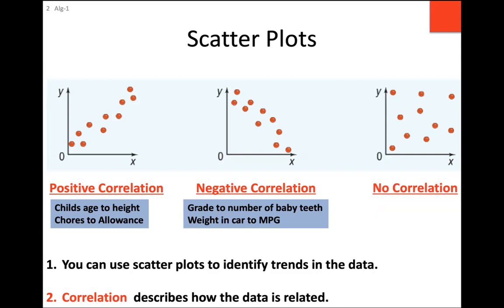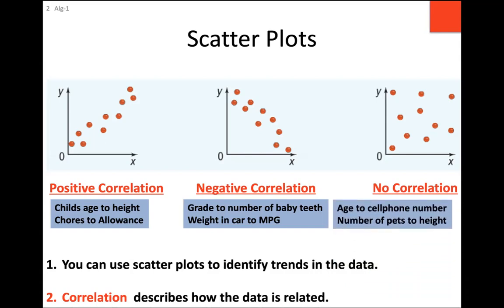Even though the third pattern doesn't look like one, we call no pattern a pattern — when there is no pattern, we say there is no correlation. The only ones you typically confuse are negative and no correlation. Negative means the data is dropping from left to right in a downward trend. No correlation is just a random series of dots all over quadrant one — for instance, your age versus the last four digits of your cell phone number. Correlation can be positive, negative, or no correlation.